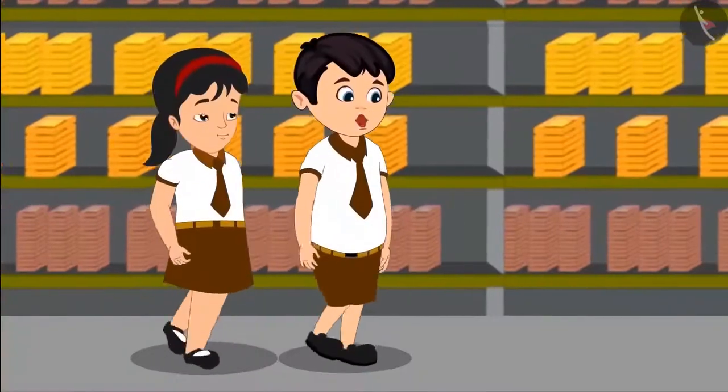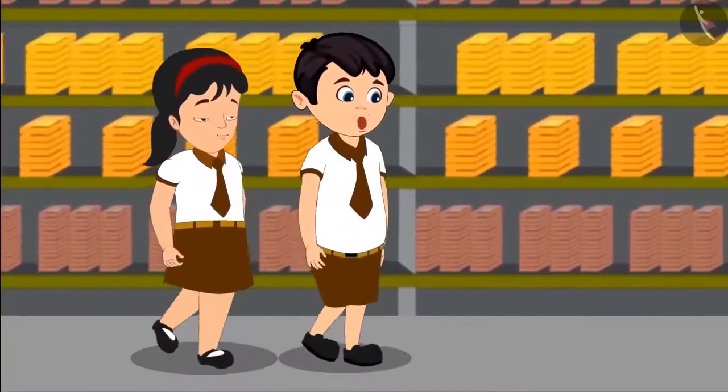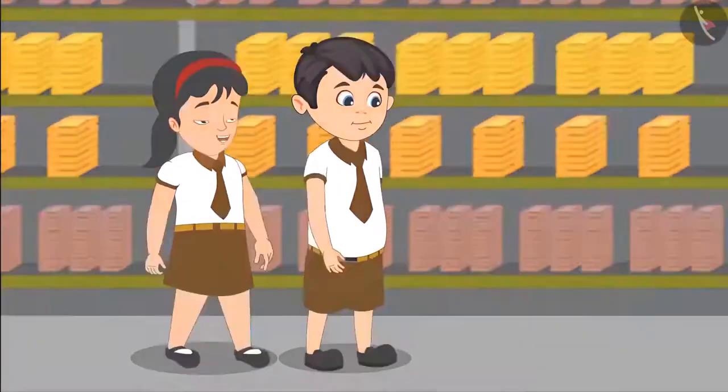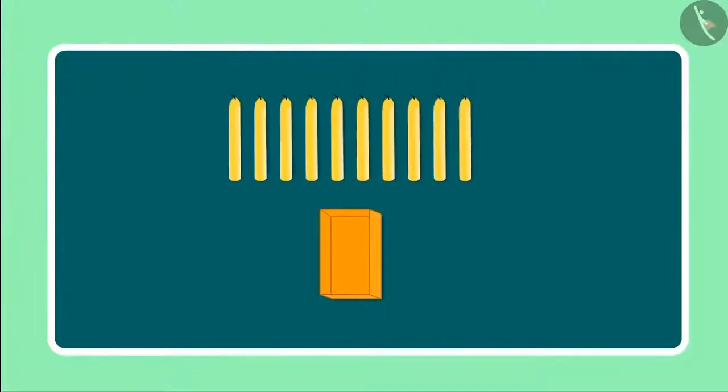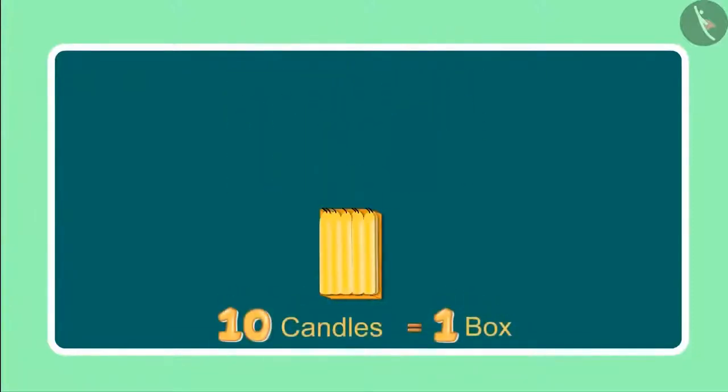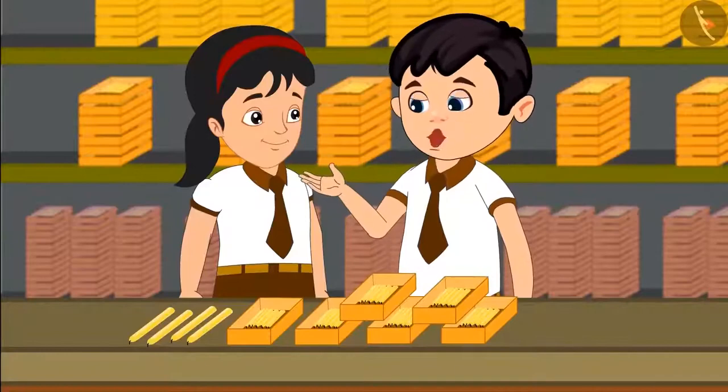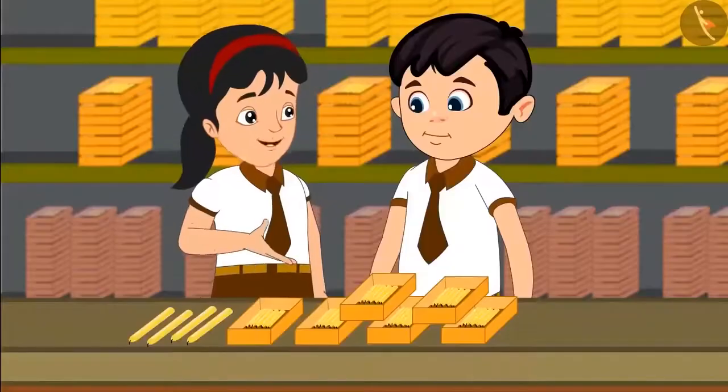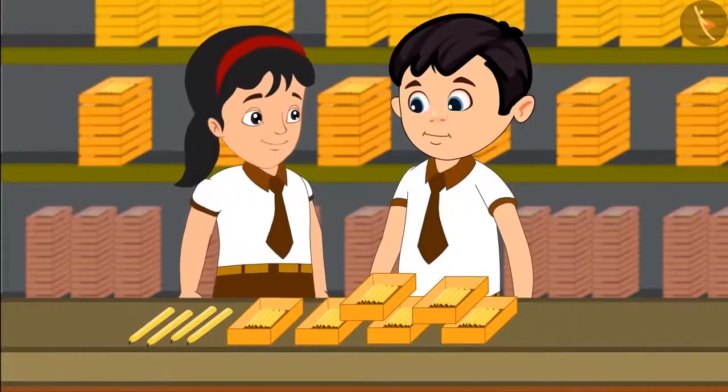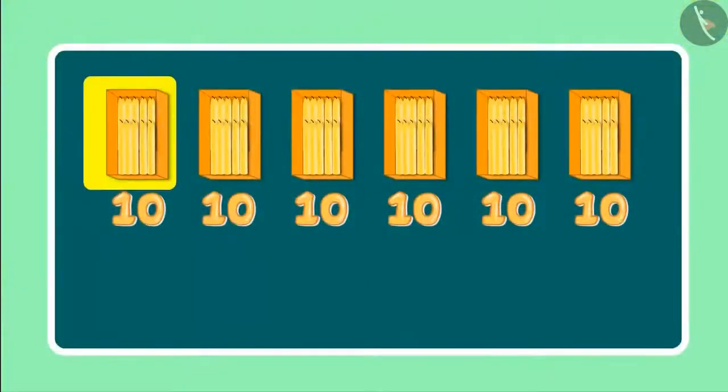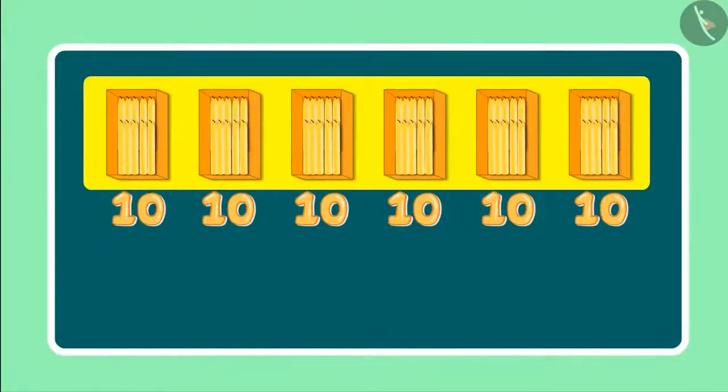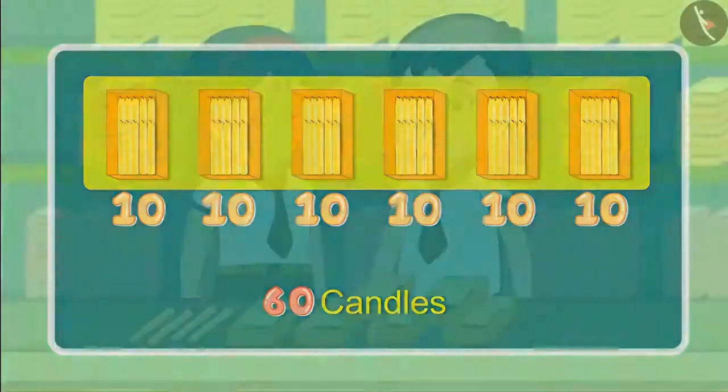Oh Pinky, look this place has so many candles. Yes, but how do these people count so many candles? Come let me tell you. They first put 10 candles in each box. Right now, we have 6 such boxes in front of us. So can you tell me how many candles must be there in total? Yes, see there are 6 boxes with 10 candles in each of them. 6 boxes would mean 60 candles.